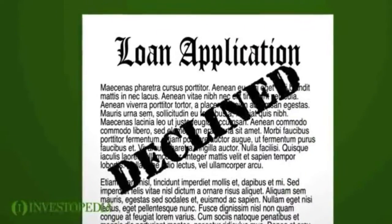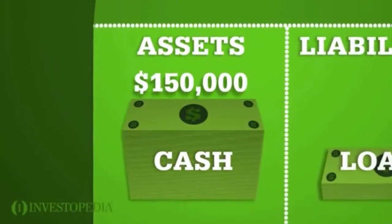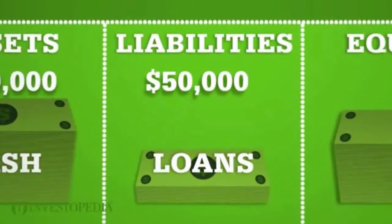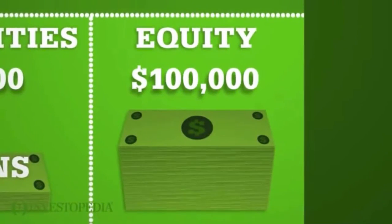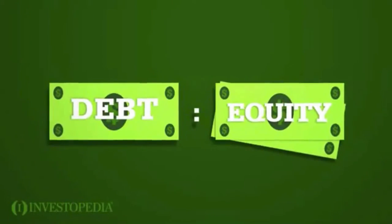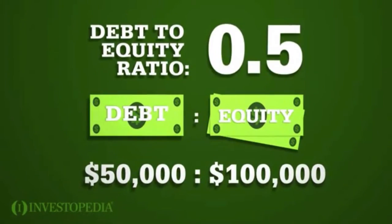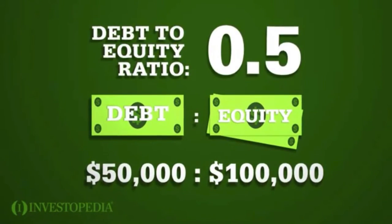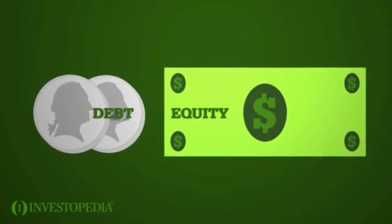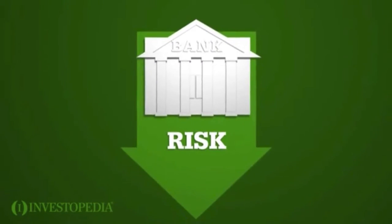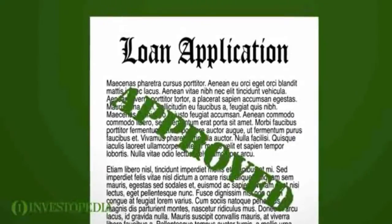His application is declined. Al's balance sheet is much stronger. Al has $150,000 in assets and only $50,000 in liabilities. His equity is $100,000. Al's debt to equity ratio is 0.5 — $50,000 over $100,000. This means Al has 50 cents of debt for every dollar of equity. Al's low debt to equity ratio makes him a low risk for the bank. His application is approved.